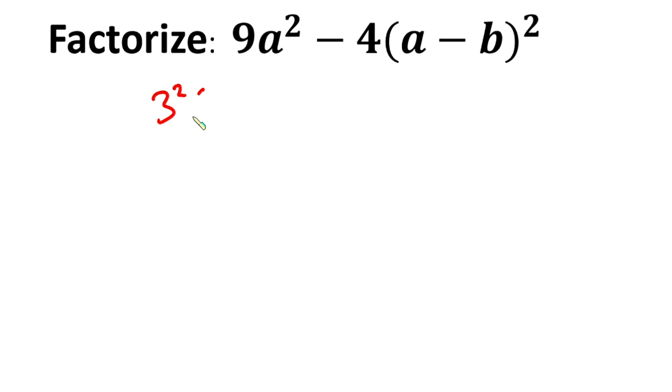3² times a², minus... then from here we can write it as 2² times (a - b)².